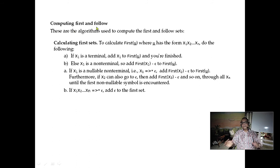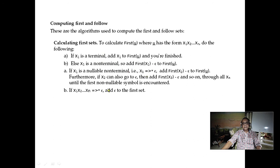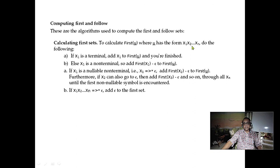Computing the First function: if a rule is U → X1 X2 ... and X1 is a terminal, add X1 to First(U) and stop. If X1 is a non-terminal and X1 derives epsilon, then include First(X2), and so on. If all symbols can derive epsilon, include Follow(U). We will go into further details of First and Follow in the next classes.